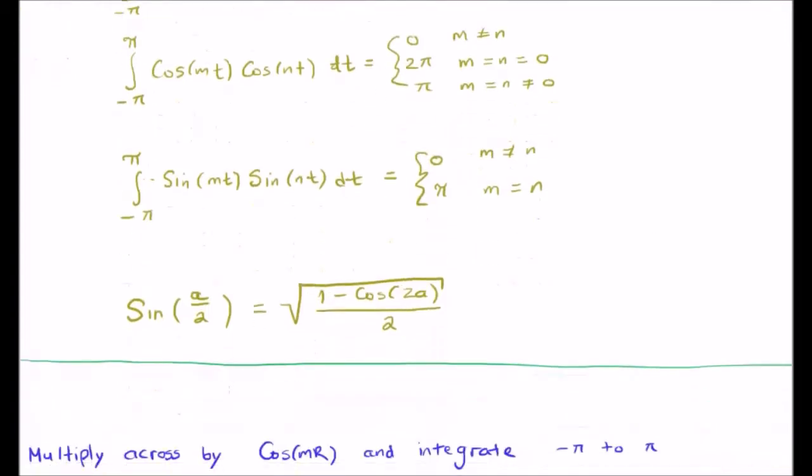The last thing we need is this double angle formula here. That is, in order to integrate cosine squared and sine squared x. Just quickly, you can look at my video on how to integrate cosine and sine squared x.